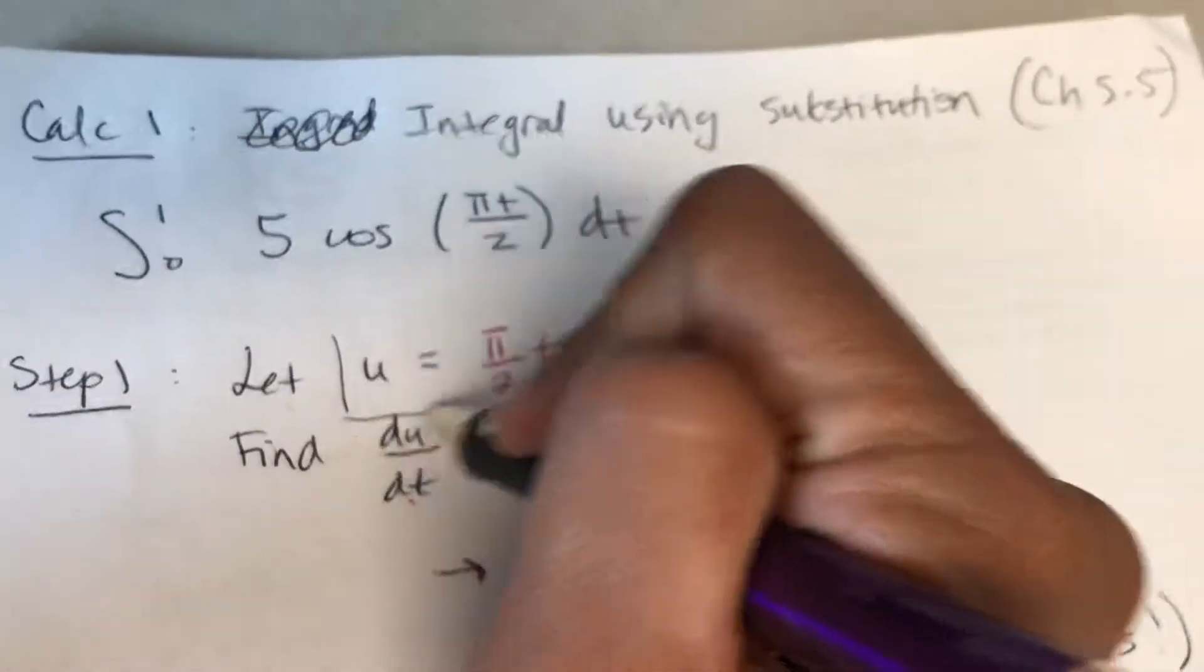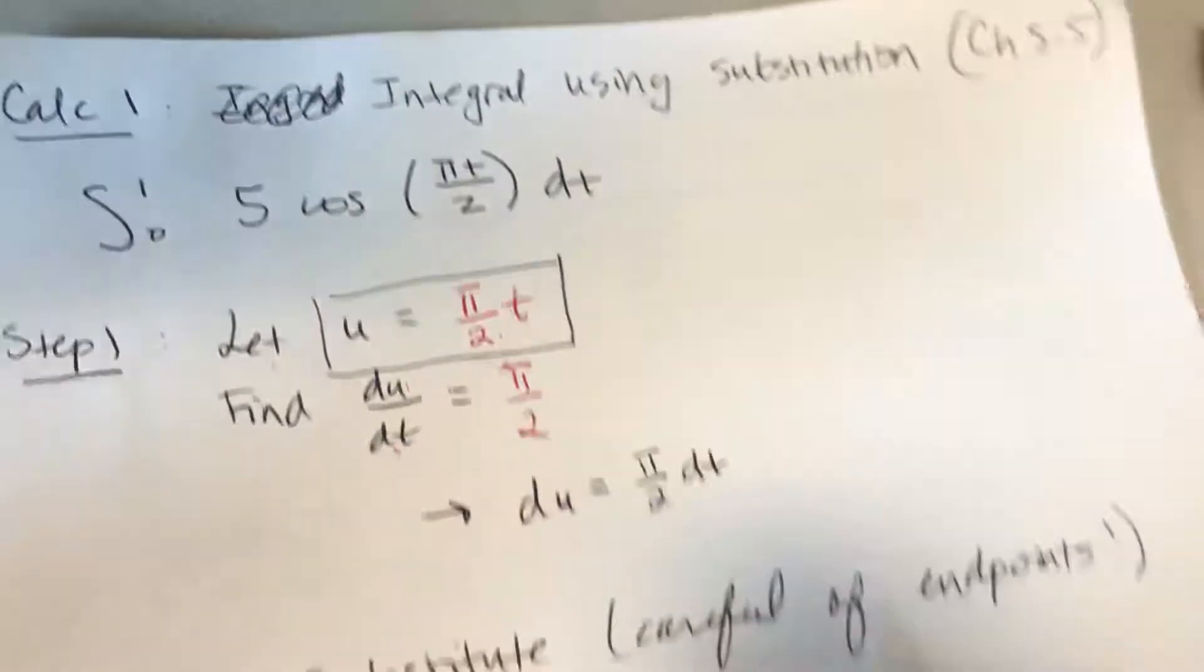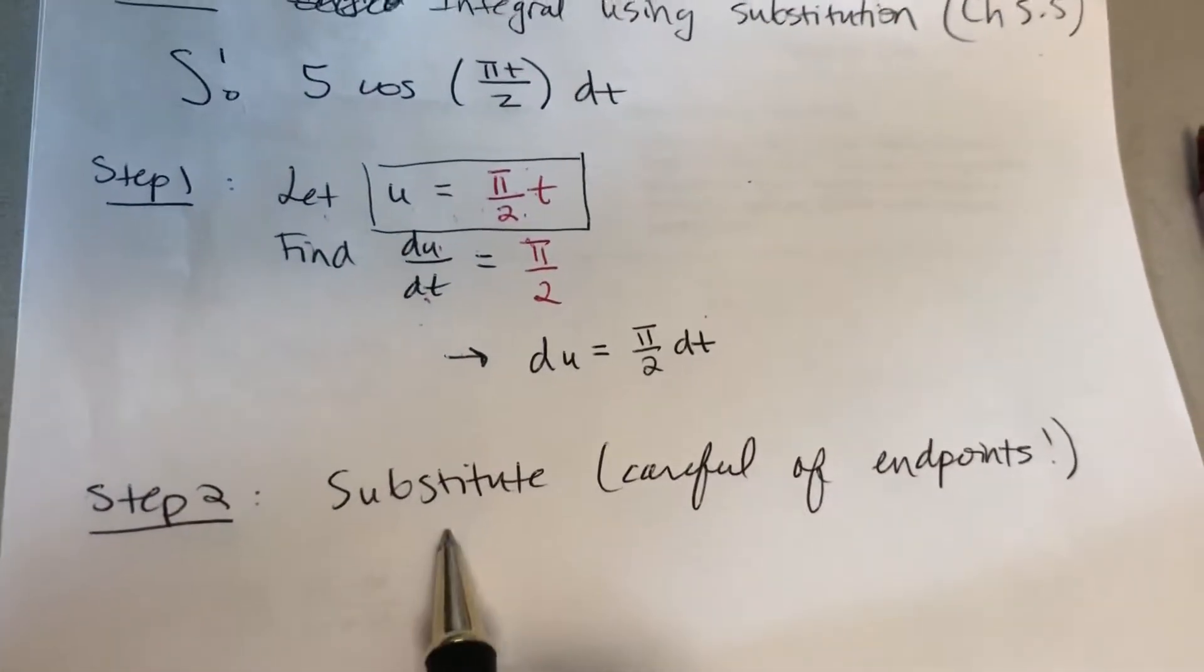I can write it like that. I'm gonna actually box u equal to pi over 2t because I'm gonna need that again. The next step, step 2, is to substitute.